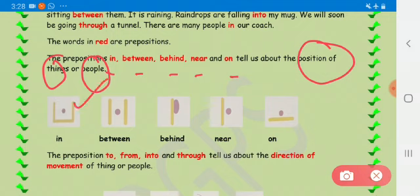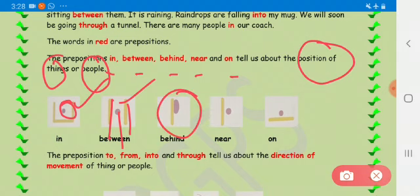Like in, between. Between is in between the two things. This dot. You have to observe the dot. Behind, near, on. Right?